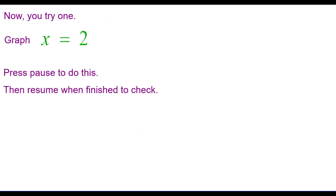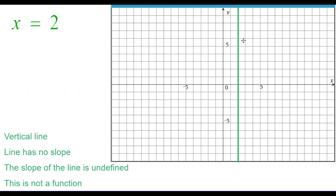Now try one yourself: graph x equals 2. Press pause to do this and then resume when you're finished to check. Here we have a vertical line x equals 2, through 2 comma 0. It is vertical. It has no slope, or the slope of the line is undefined, and this is not a function.